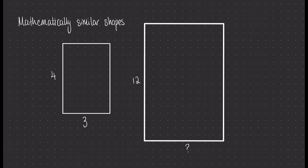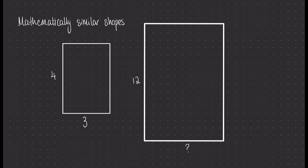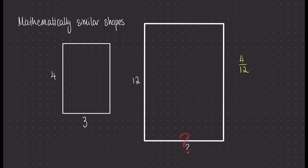Let's start by constructing a ratio between corresponding sides that we have the numbers for. The side on the left that is 4 long and the side that is 12 — we know those correspond to each other — so let's construct the ratio 4 over 12. We know that corresponding sides share this same ratio, so I'm looking for the missing side whose corresponding side is 3. We started with the smaller shape, so we keep that pattern and do 3 over x. Multiplying both sides by x, then by 12, then dividing by 4, we get that x is in fact 9.